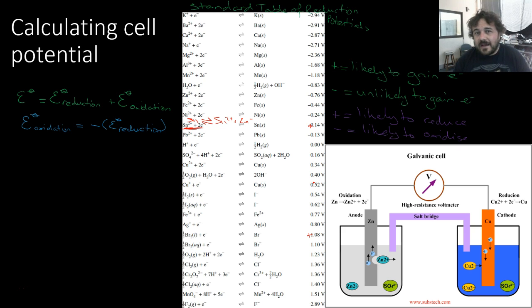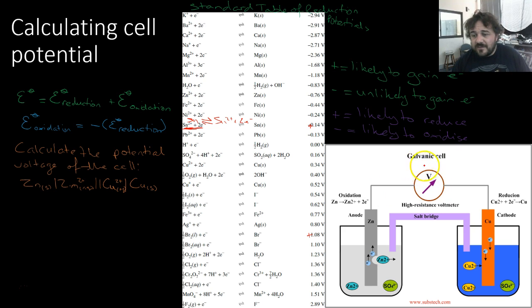So, if you've got one which is more negative than the other, it is more likely to be the one which reduces. Now, you want to be able to calculate the potential, the cell potential, of this galvanic cell over here, so it's zinc, copper. There are steps. Remember, these are not magical things. These are processes, and if you do them one by one, you'll be fine.